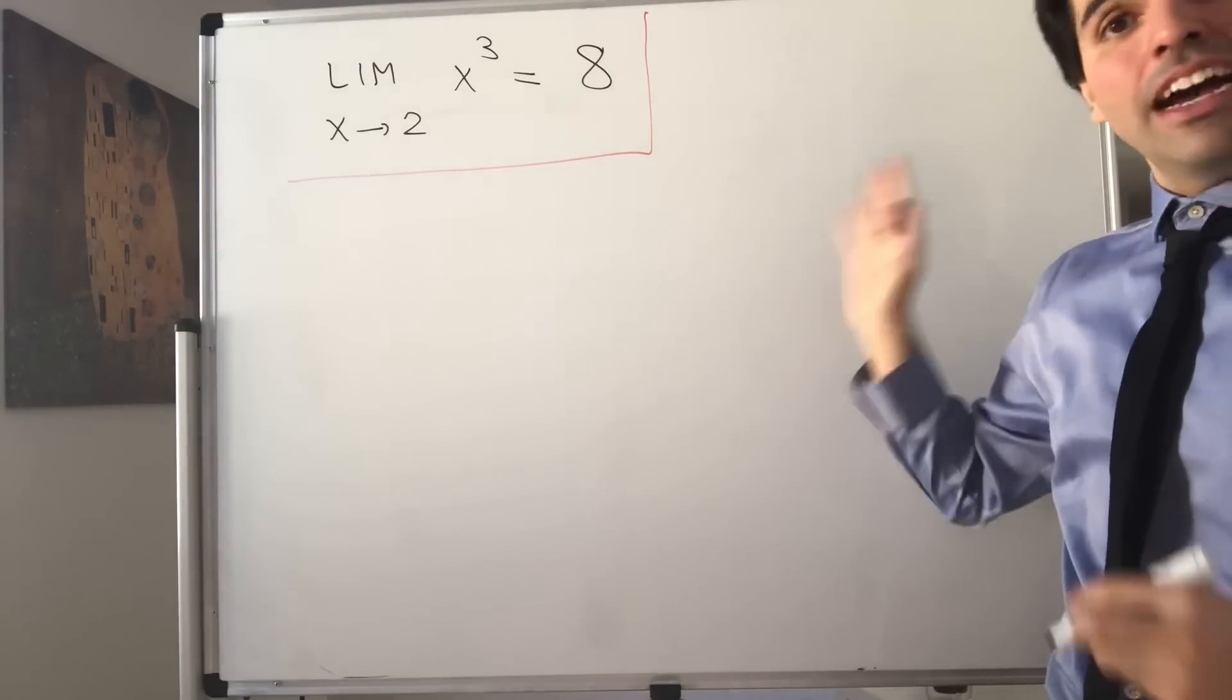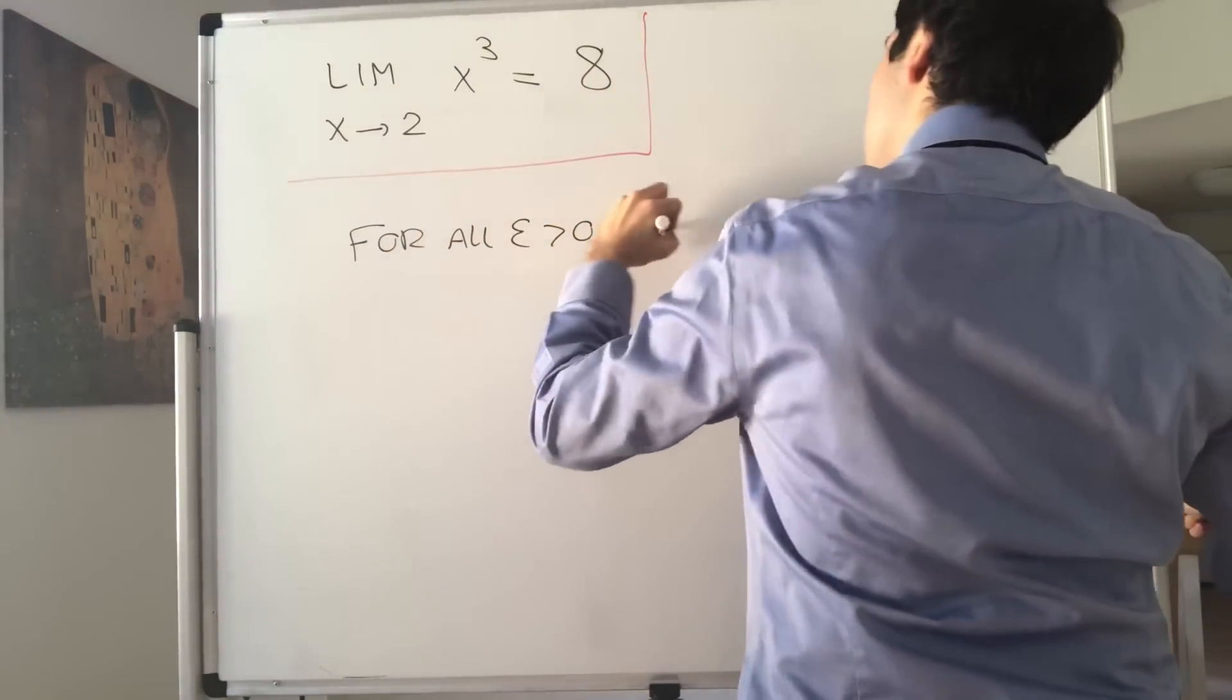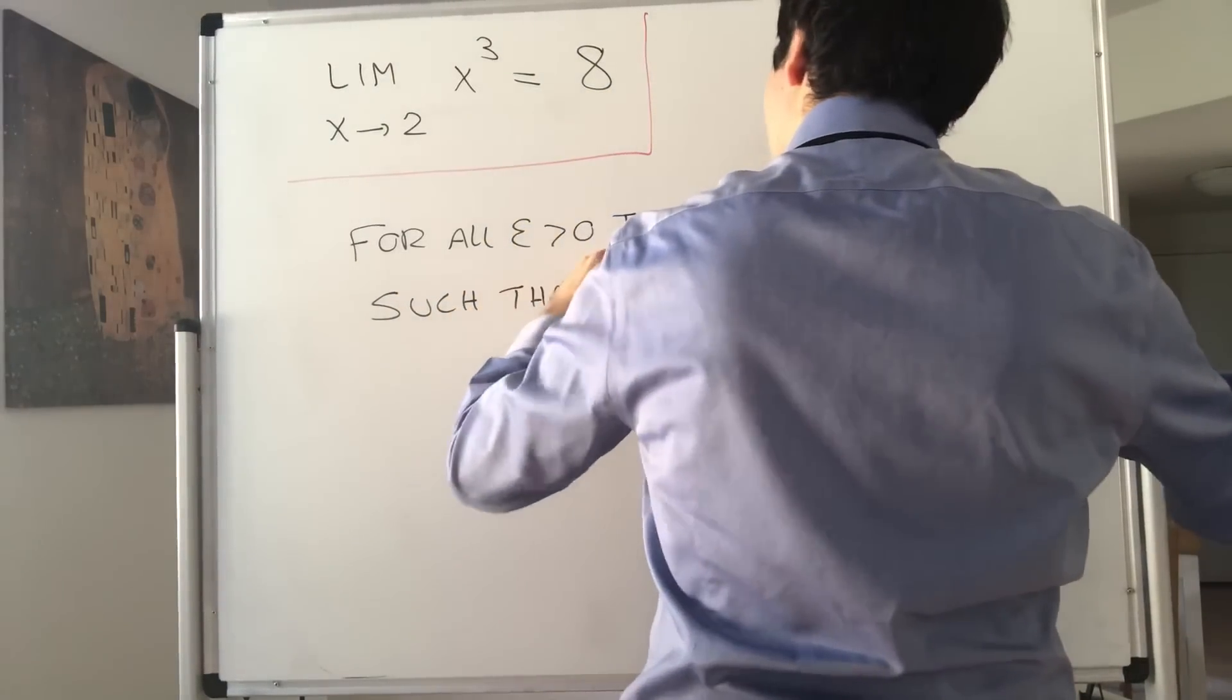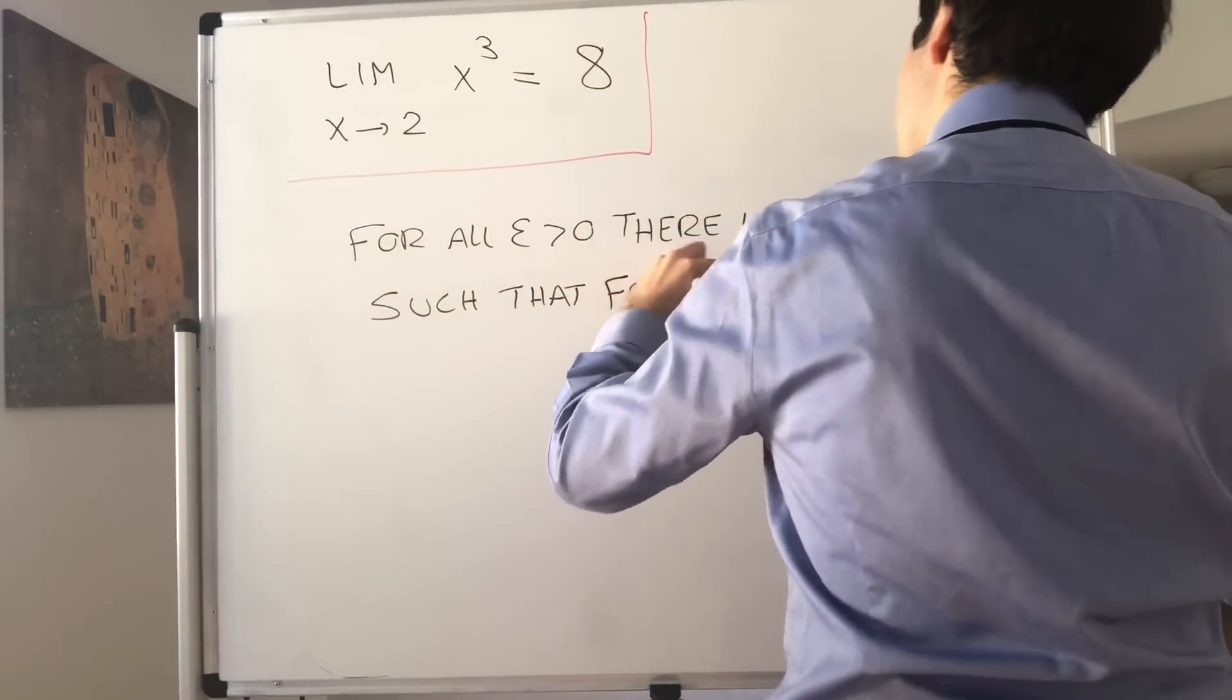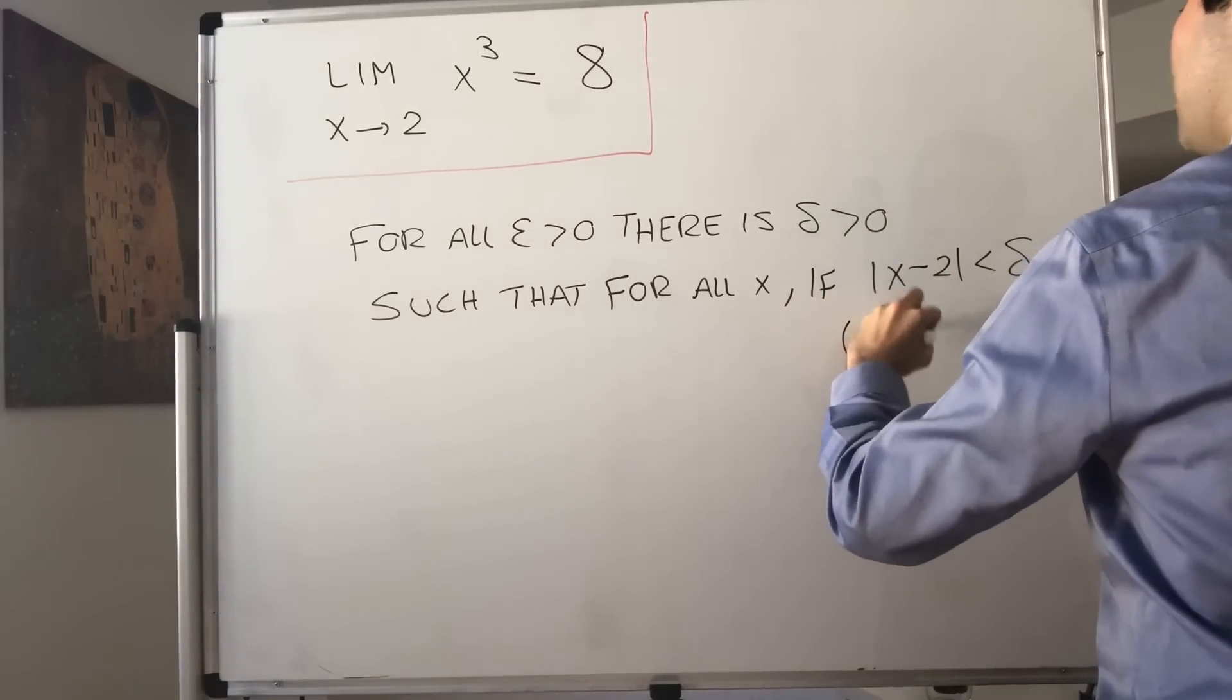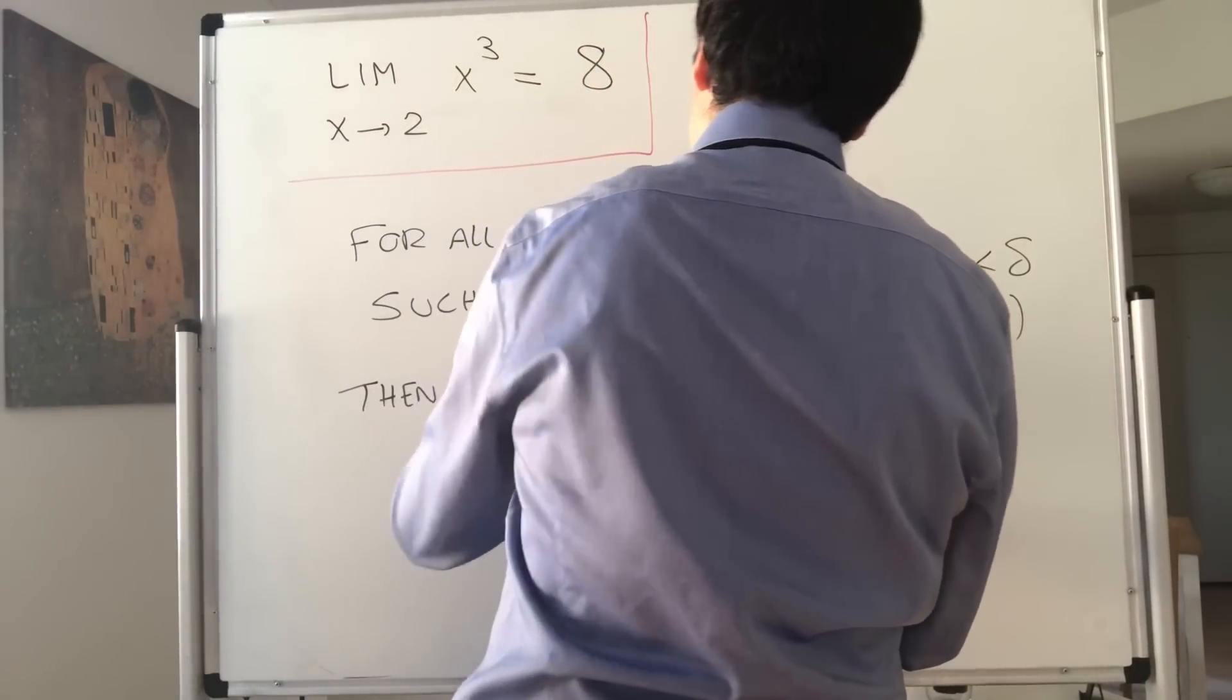Let me remind you what epsilon-delta says. It says that for all epsilon greater than 0, there is delta greater than 0 such that for all x, if the absolute value of x minus 2 is less than delta and x is not equal to 2, then in this case x cubed minus 8 is less than epsilon.